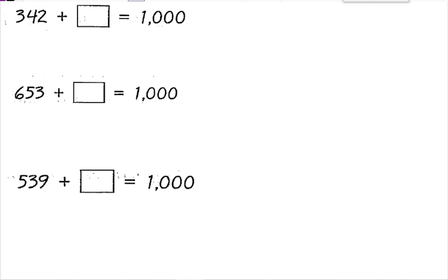Let's practice with these ones. I need to think: 2 plus something has to equal 10, so 2 plus 8 equals 10. 4 plus something has to equal 9, so 4 plus 5 equals 9. And 3 plus 6 equals 9. So the answer is 658.